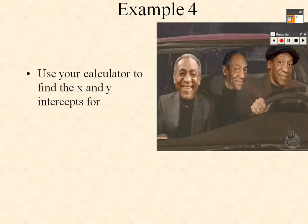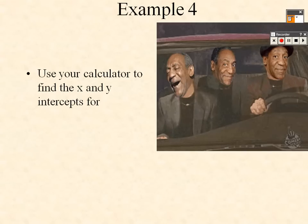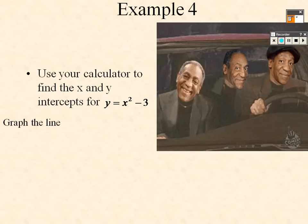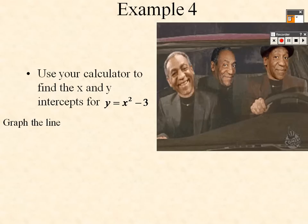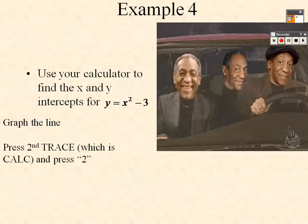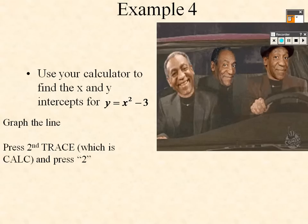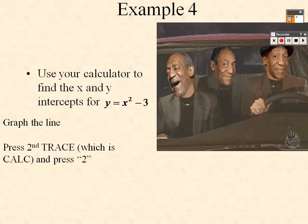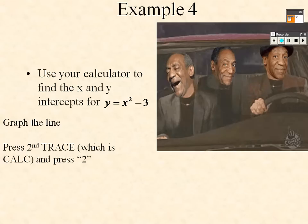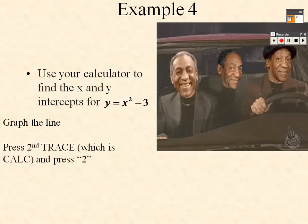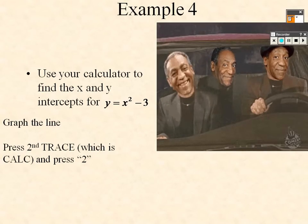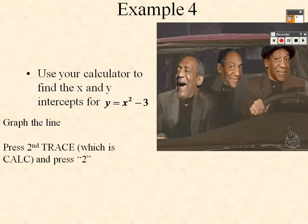Now use your calculator to find the x and y intercepts for y = x² - 3. To graph it on a graphing calculator, press Y=, enter X² - 3, and press Graph.